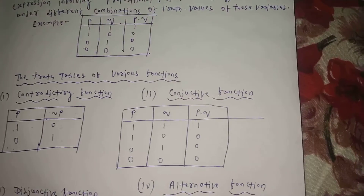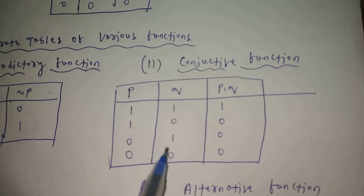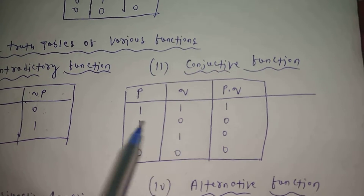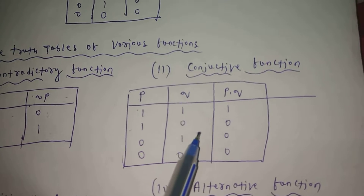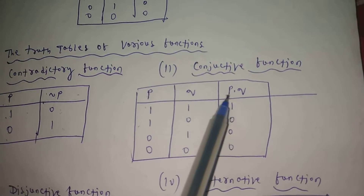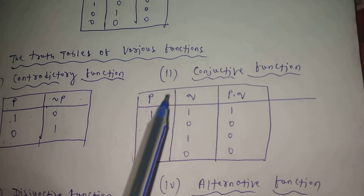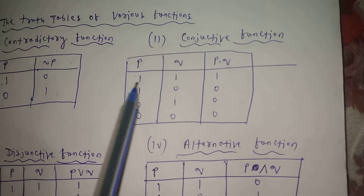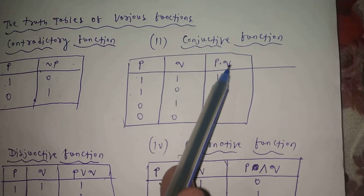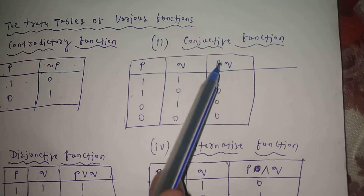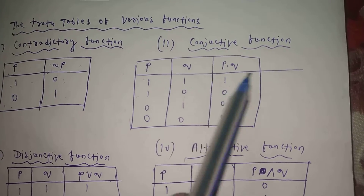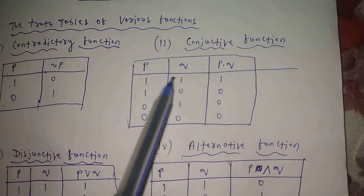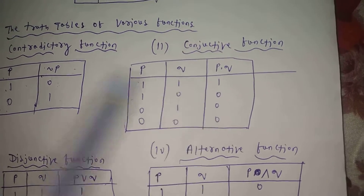Conjunctive function means 'and.' In the conjunctive function, P values are 1, 1, 0, 0 and Q values are 1, 0, 1, 0. If both P and Q are true, the conjunctive function is true — value 1. In all other cases it will be false.